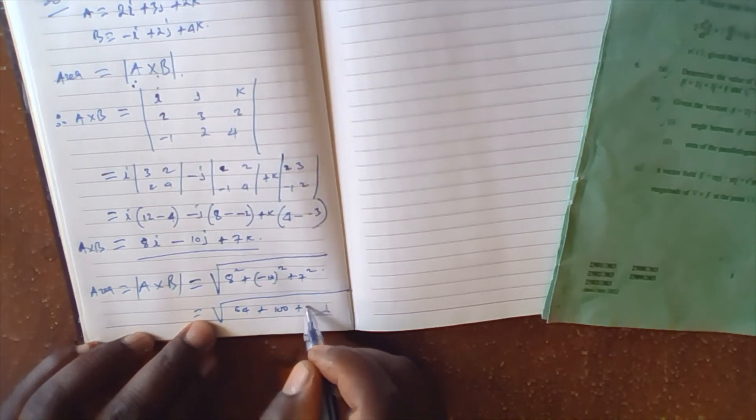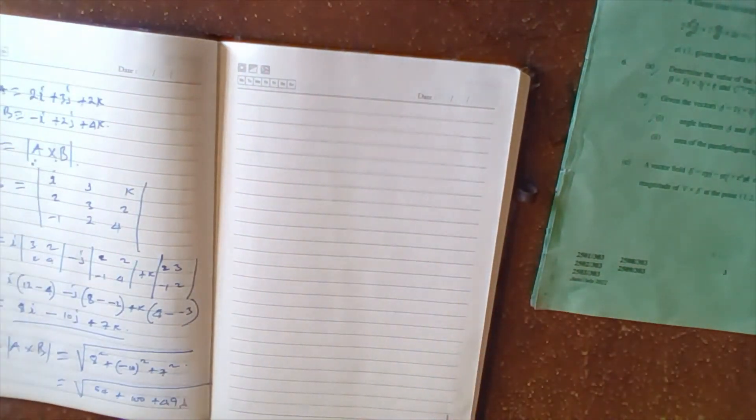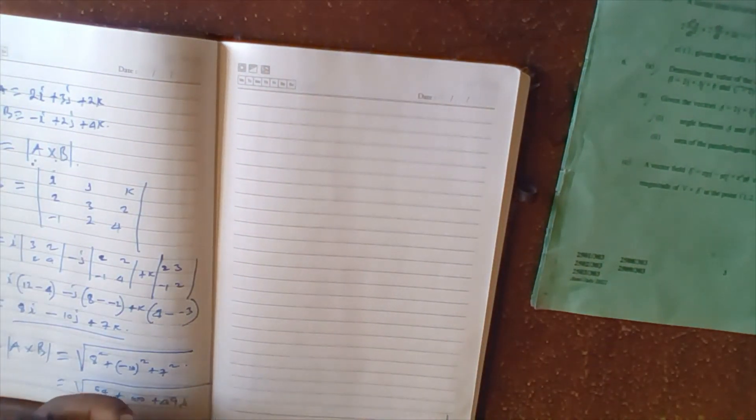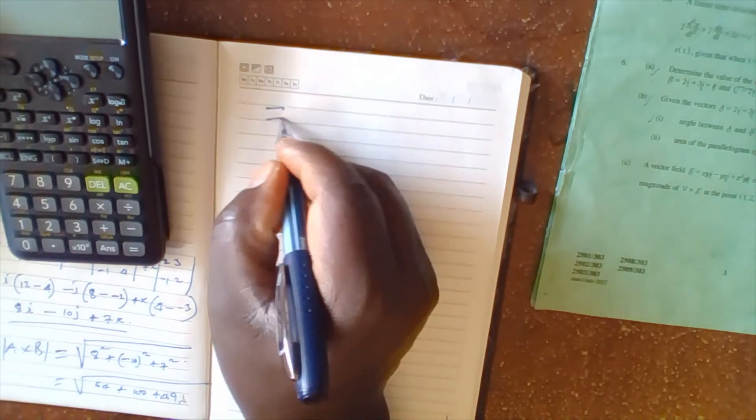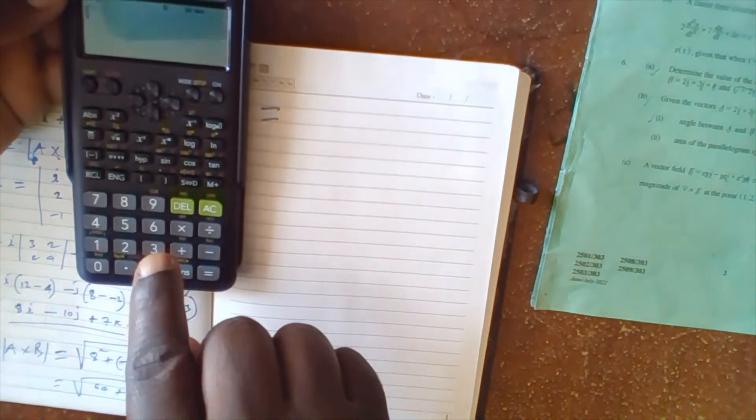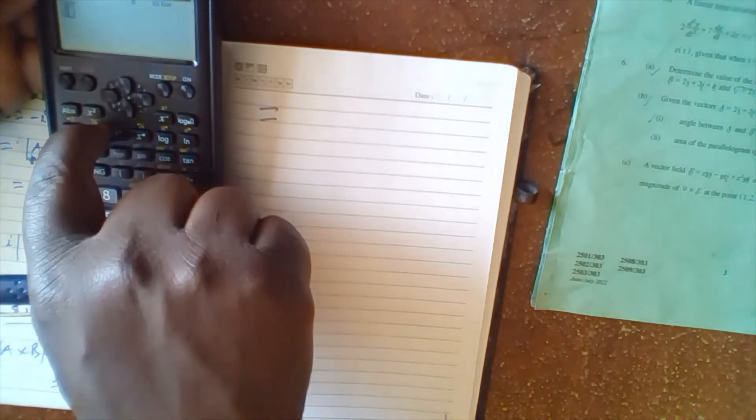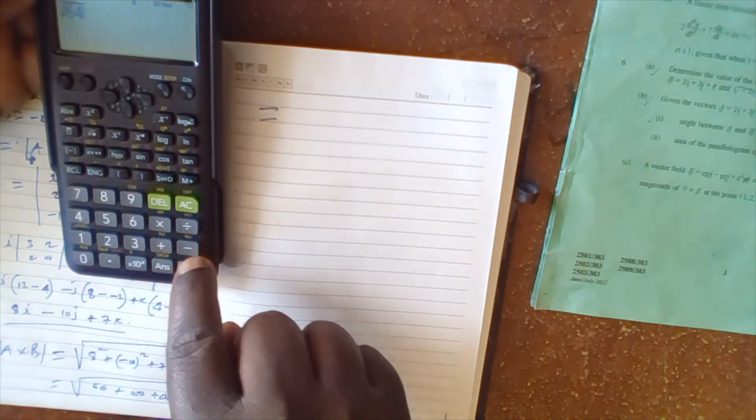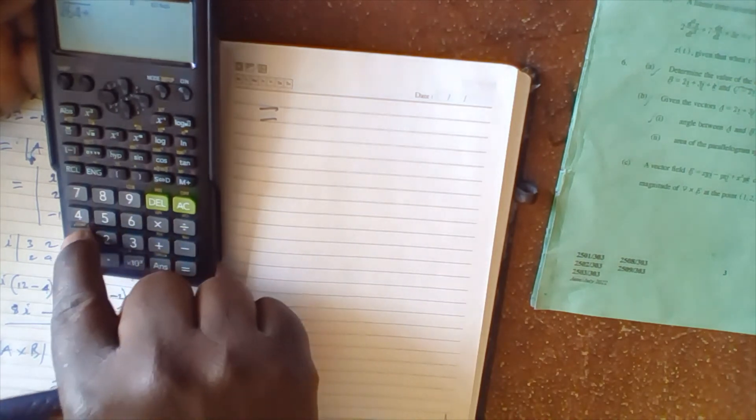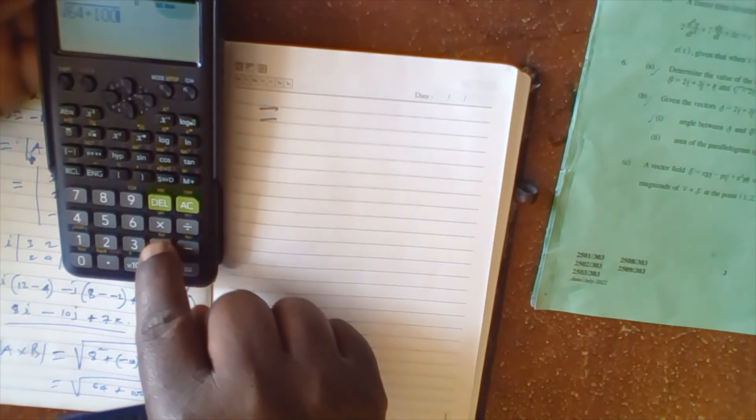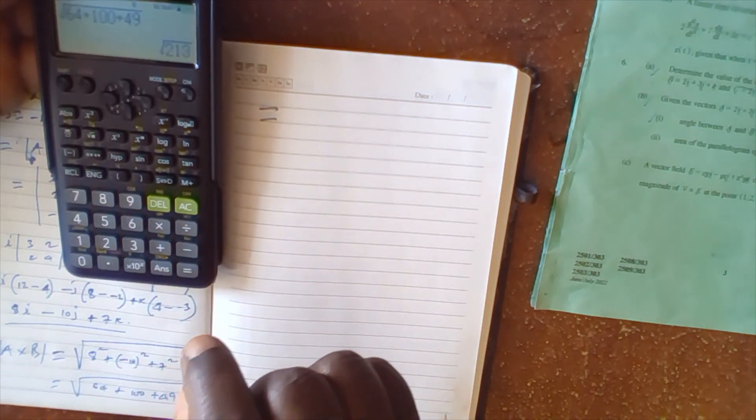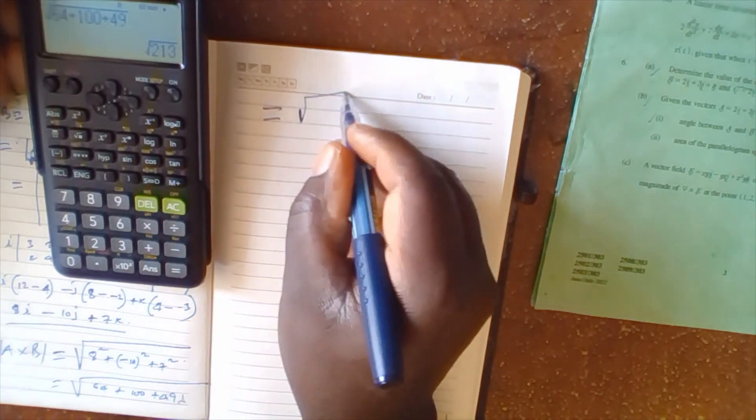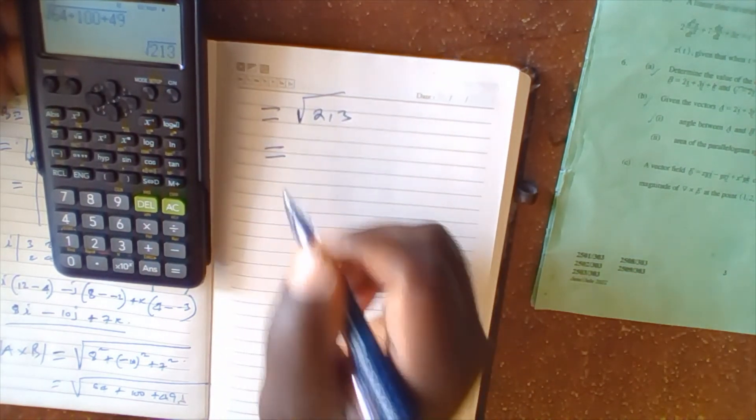This equals the square root of 64 plus 100 plus 49. Using our calculator, this would be the square root of 64 plus 100 plus 49.